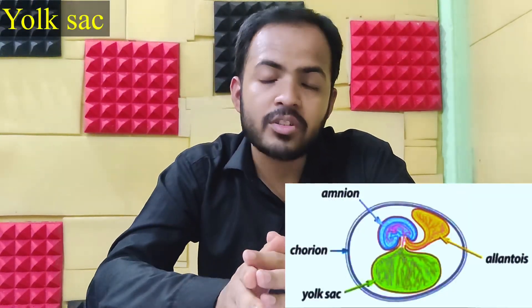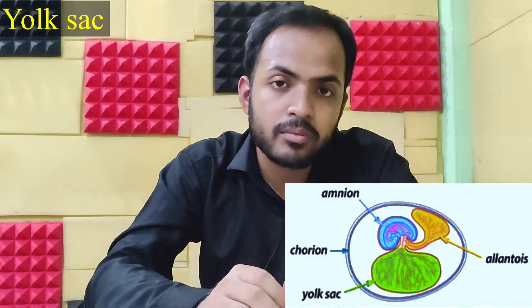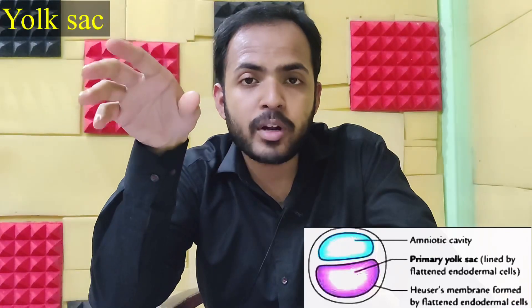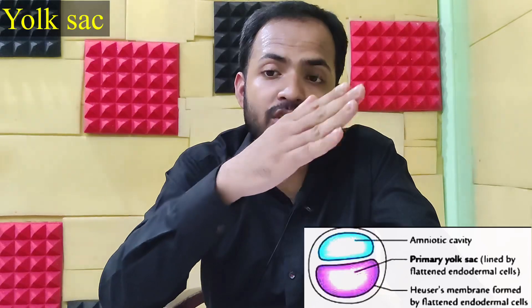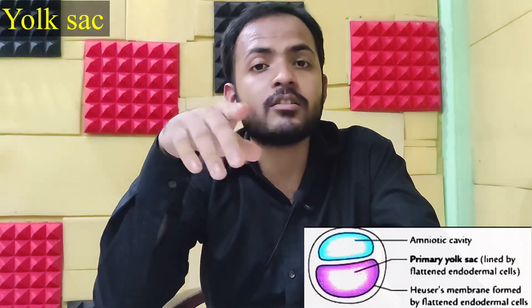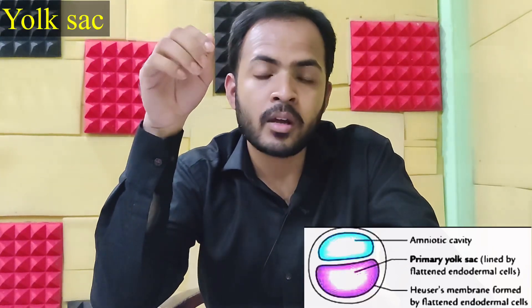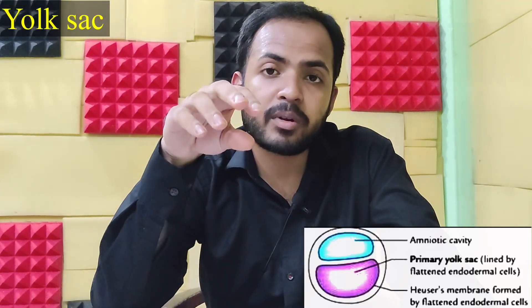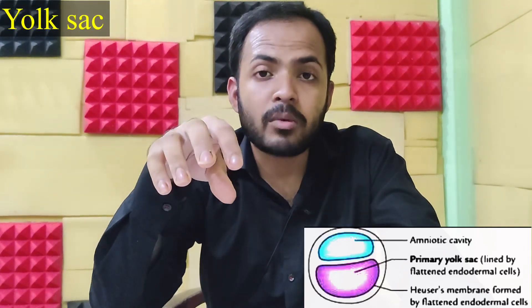Our last topic is the Exocoelom. It is also a cavity which ultimately develops from the blastocyst, as you can see in this photo. The Exocoelom is of three types: primary, secondary, and definitive. For the primary Exocoelom, hypoblast cells multiply and form a cellular lining over the blastocyst cavity known as the Heuser's membrane. From this membrane, the blastocyst cavity forms, and this cavity is known as the primary Exocoelom.